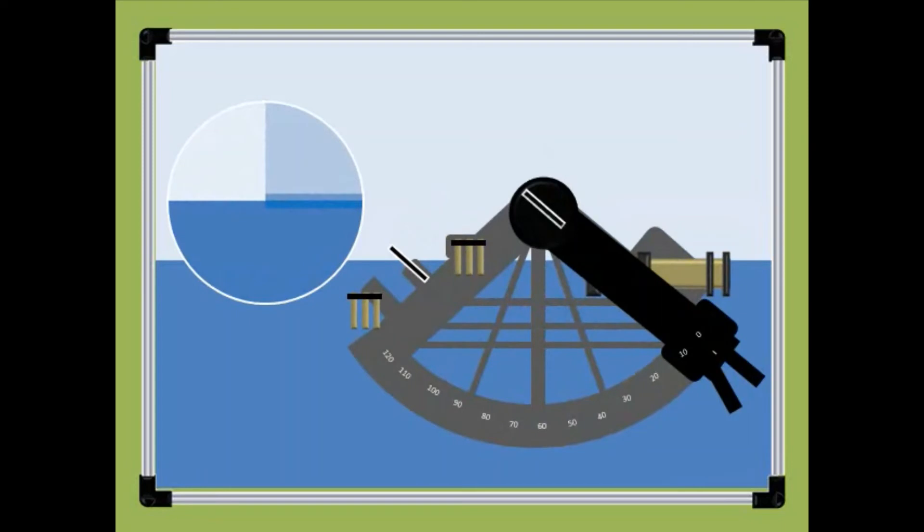Set the sextant into 0 degree position. When the true horizon and the reflected horizon do not come into line, that indicates that the sextant has an index error.